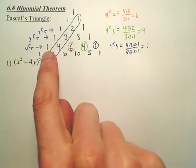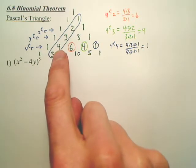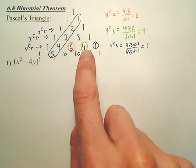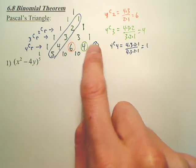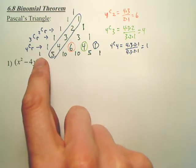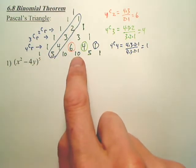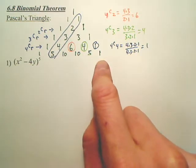This right here is 4C0, 4C1, 4C2, 4C3, 4C4. This right here is 5C0, 5C1, 5C2, 5C3, 5C4, 5C5.